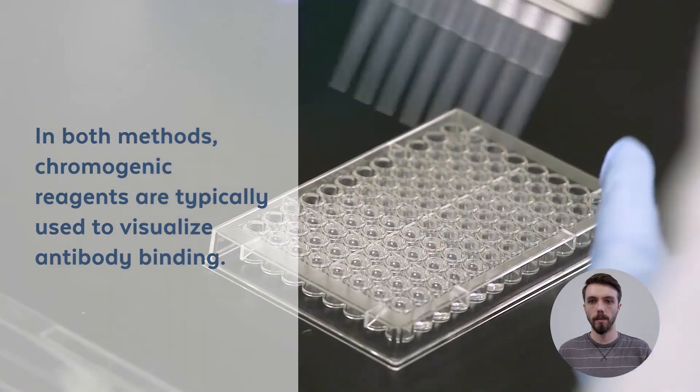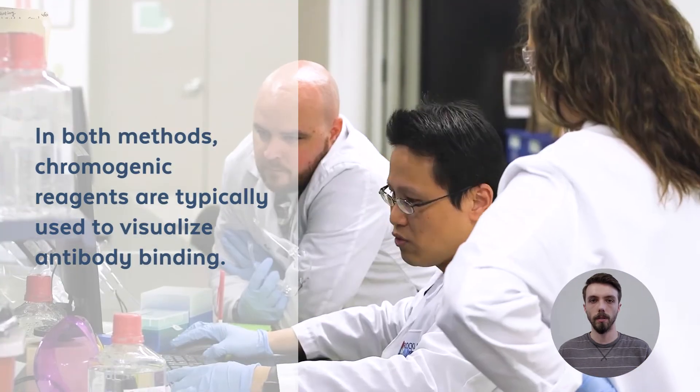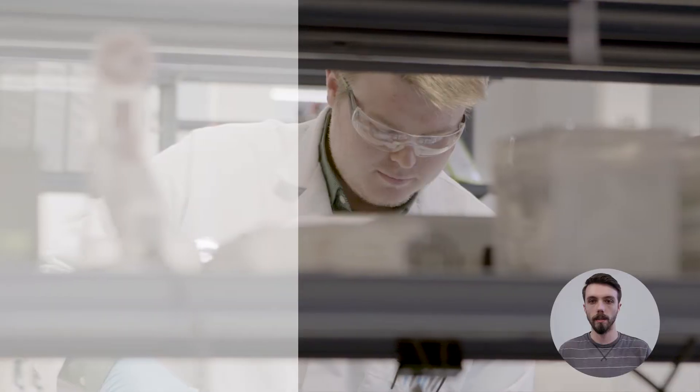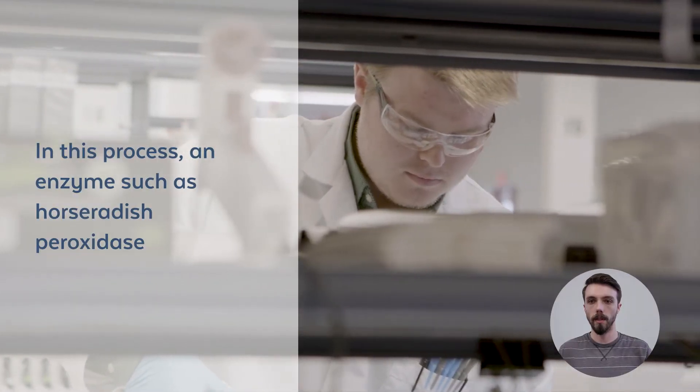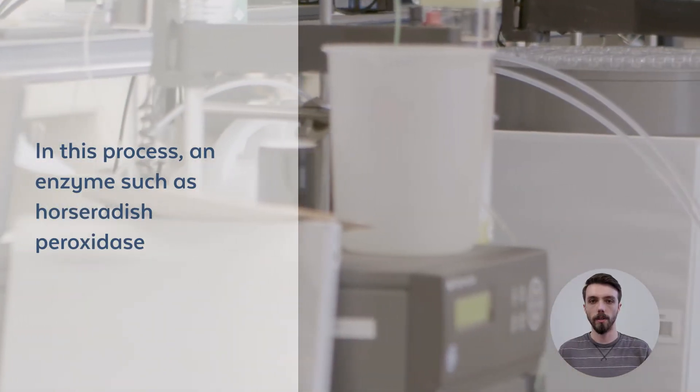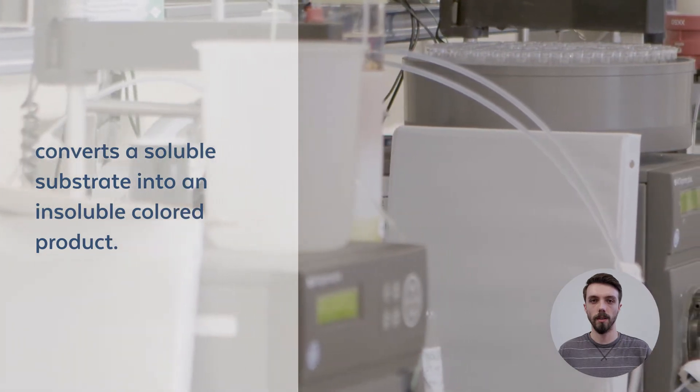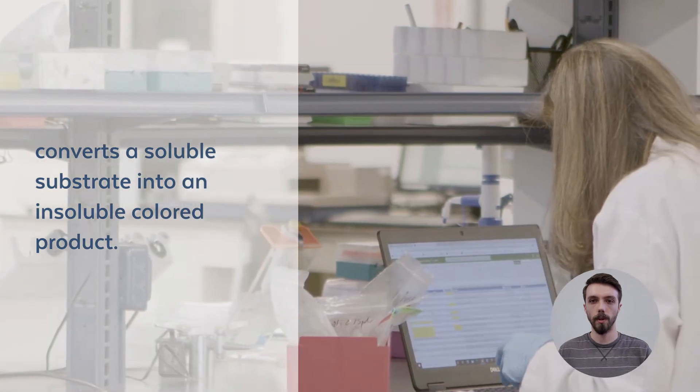In both methods, chromogenic reagents are typically used to visualize antibody binding. In this process, an enzyme, such as horseradish peroxidase, converts a soluble substrate into an insoluble colored product.